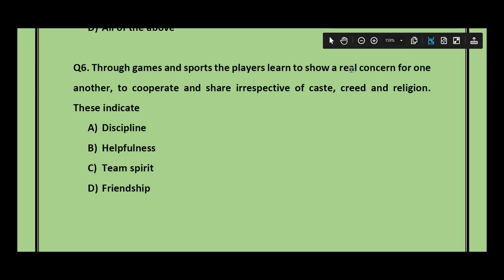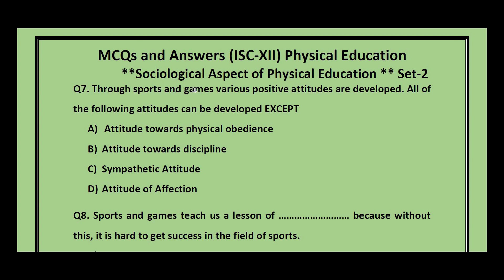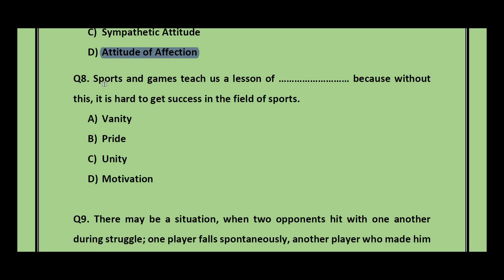Question number 6: Through games and sports, players learn to show real concern for one another, to cooperate and share irrespective of caste, creed, and religion. These indicate — discipline, helpfulness, team spirit, or friendship? The answer is friendship. Question number 7: Through sports and games, various positive attitudes are developed. All of the following attitudes can be developed EXCEPT — attitude towards physical obedience, attitude towards discipline, sympathetic attitude, or attitude of affection? The answer is attitude of affection.